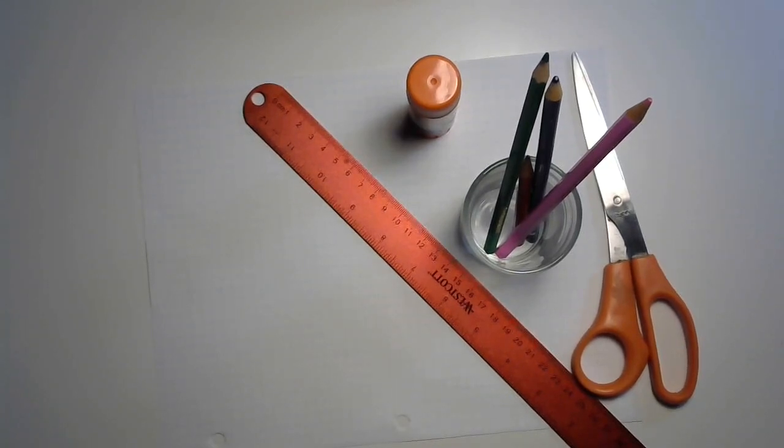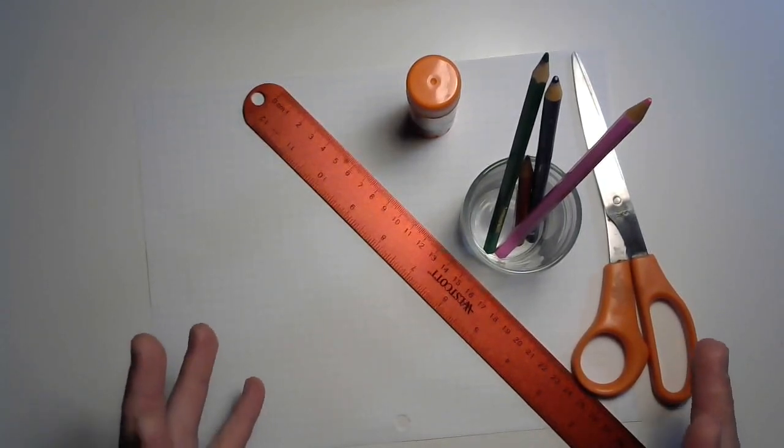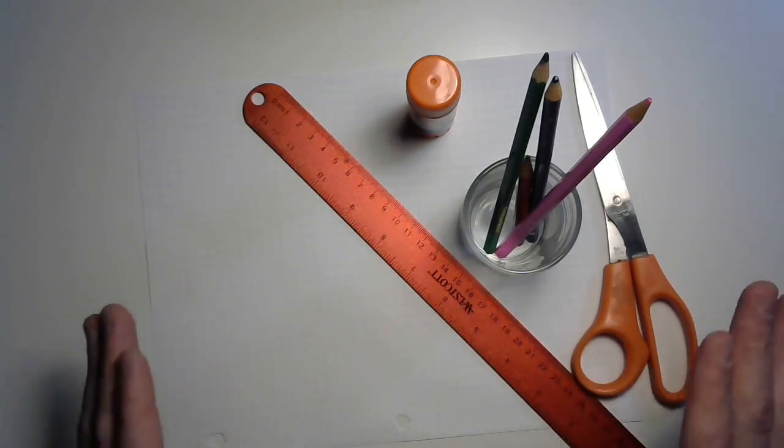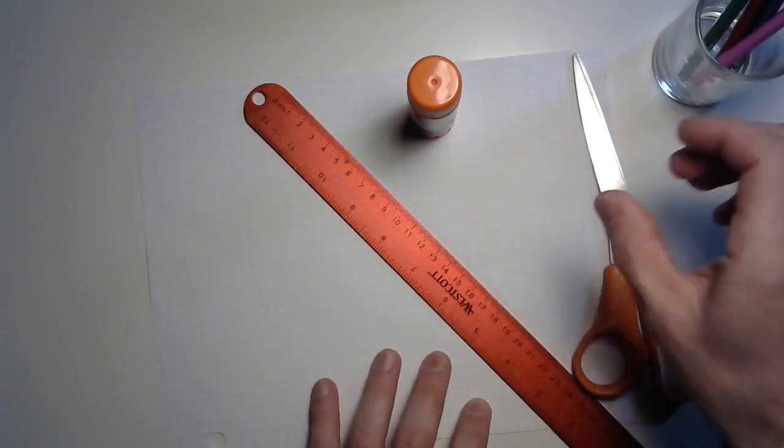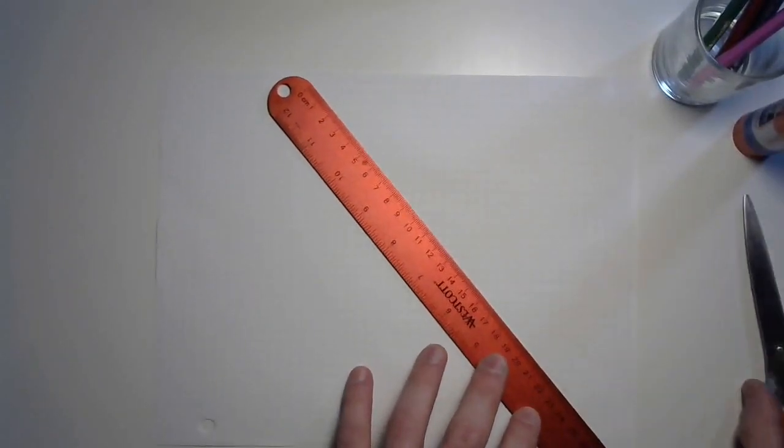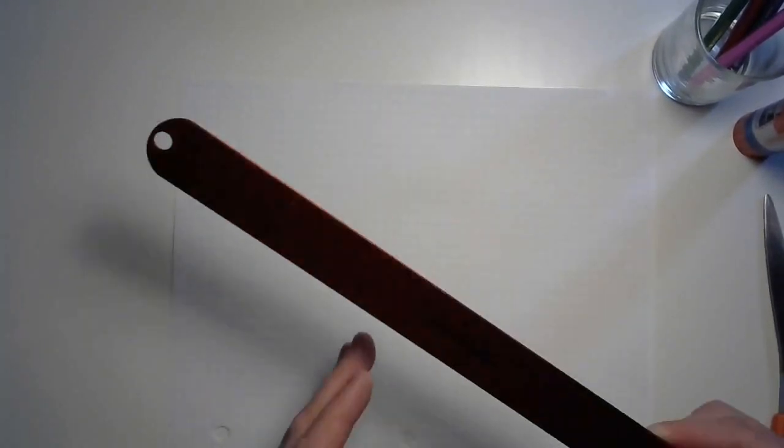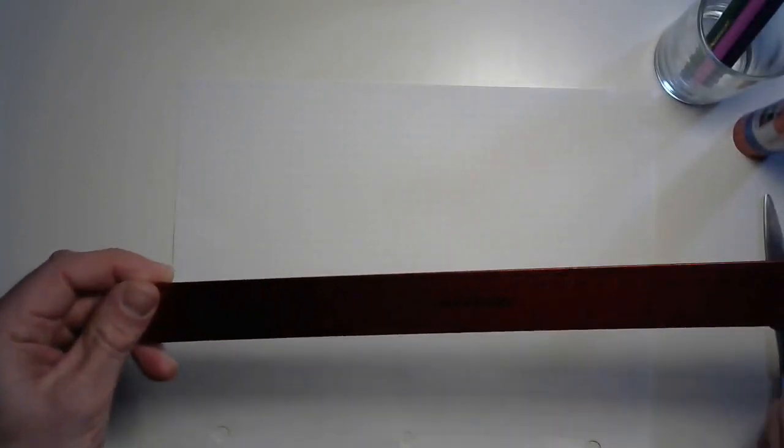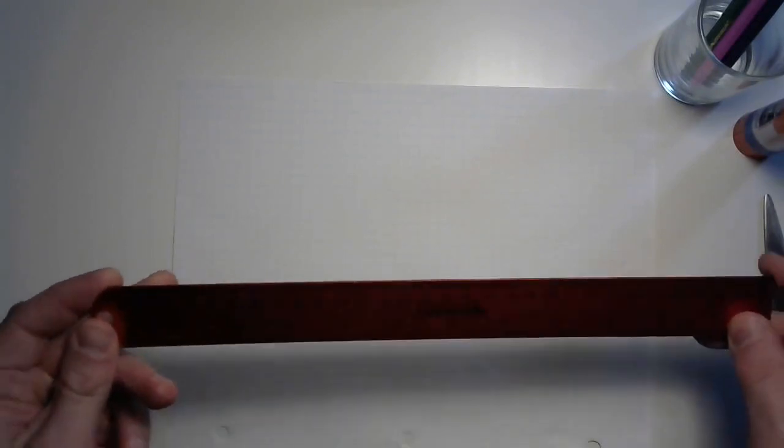We are going to be making a triflexagon and to do that we're going to have to measure some stuff out. Let's get started. Now you're probably going to need the entire sheet of paper to do this, so make sure you're measuring very carefully.